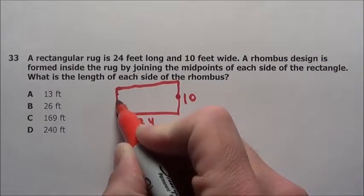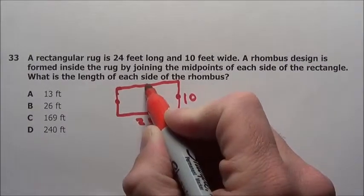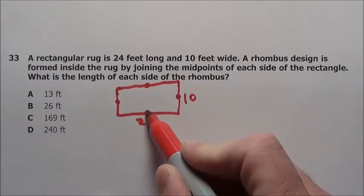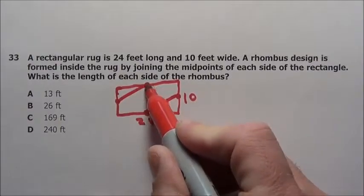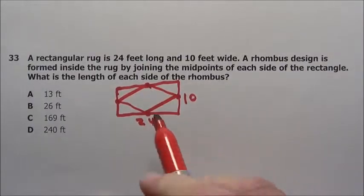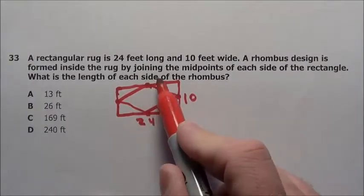So here's the midpoint of that side, here's the midpoint of that side, here's the midpoint of 24, midpoint down here of 24. So it's doing this. Now remember, a rhombus, all these sides are going to be exactly the same.